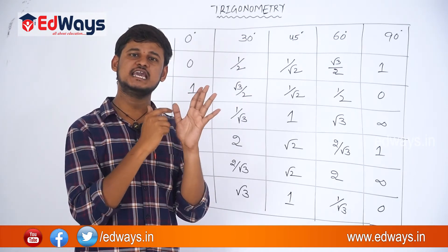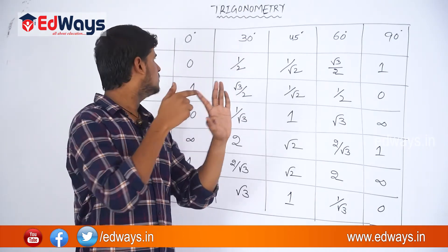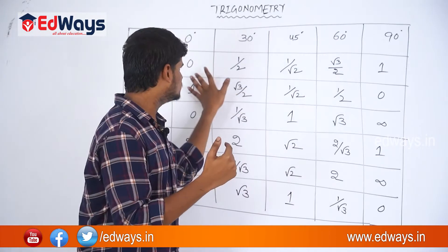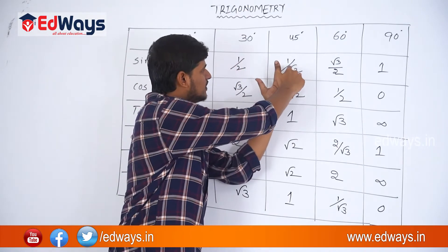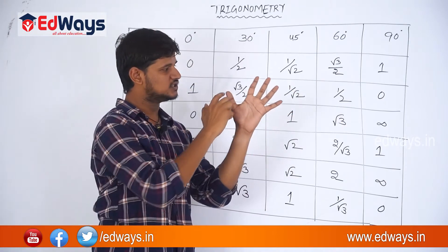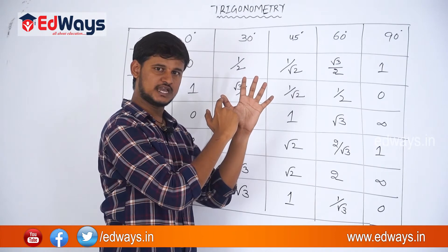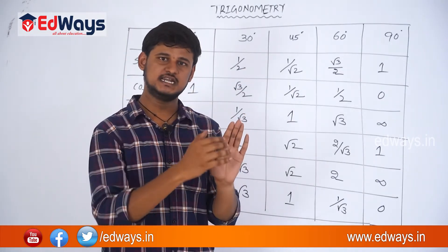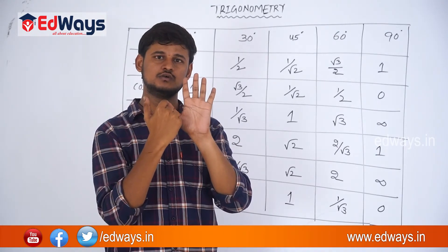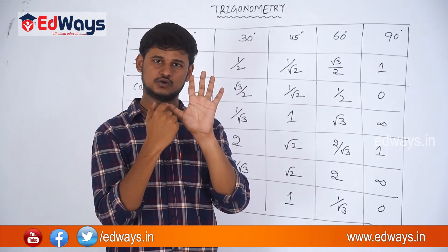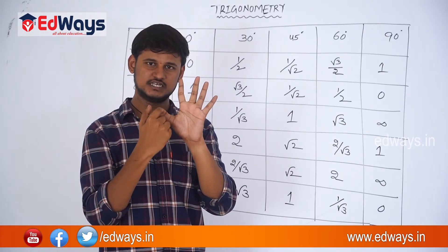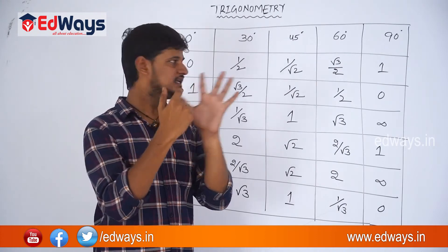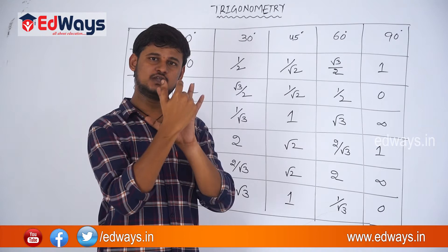Also assign the angles in ascending order to each finger: 0°, 30°, 45°, 60°, and 90°. So each finger gets both an angle and a value — 0° and 0, 30° and 1/2, 45° and 1/√2, 60° and √3/2, 90° and 1. For finding sin values, go from the thumb to the little finger: sin 0° = 0, sin 30° = 1/2, sin 45° = 1/√2, sin 60° = √3/2, sin 90° = 1.